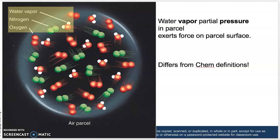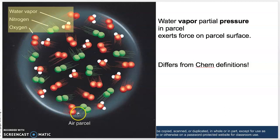Air pressure is the force of molecules on a surface area. If we had a parcel of air — like a model parcel of air, like an air mass — we could say that air pressure is the force of all of those molecules pushing against the surface area of that air mass. We can break the total air pressure down into partial pressures of nitrogen, oxygen, and water vapor molecules.